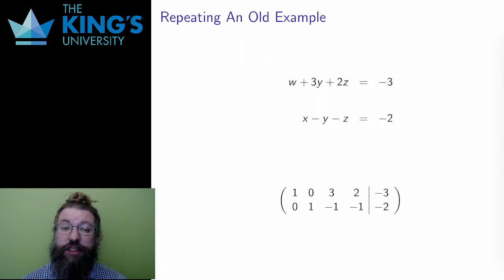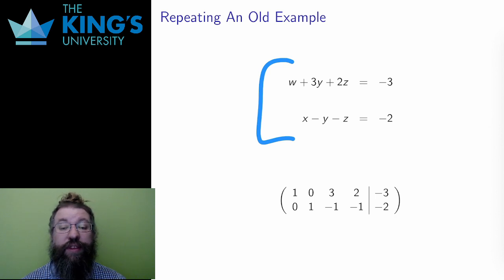Consider one of last week's examples. Here is a system of two equations in four variables. I put this system into a matrix as I did last week. I row reduce that matrix to produce this.